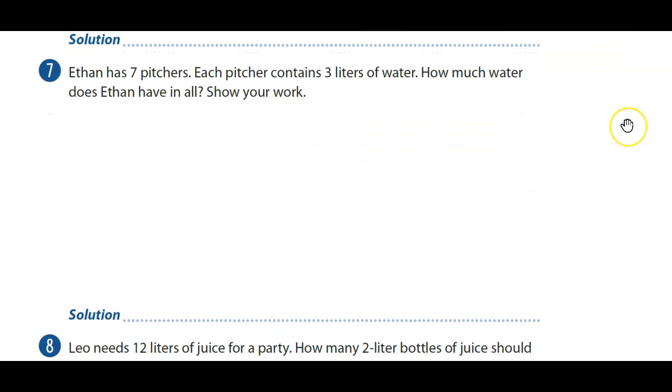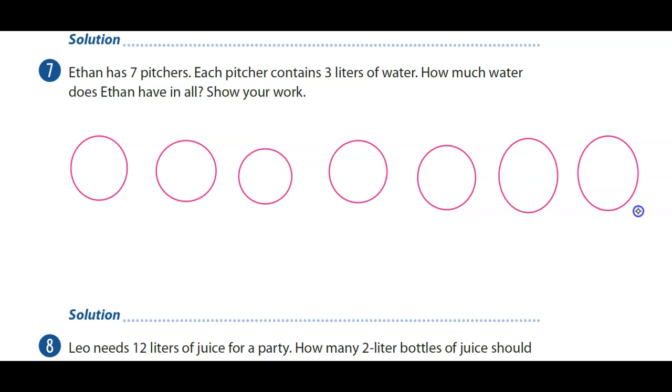Now here it says, Ethan has 7 pitchers. 1, 2, 3, 4, 5, 6, 7.